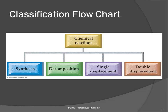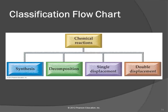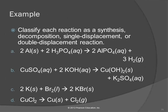Here's a classification flowchart for chemical reactions — classifying them by what the atoms are doing. We can classify them as synthesis, which has one product; decomposition, which has one reactant; single displacement, where you have a compound and an element; and double displacement, where you have two compounds.